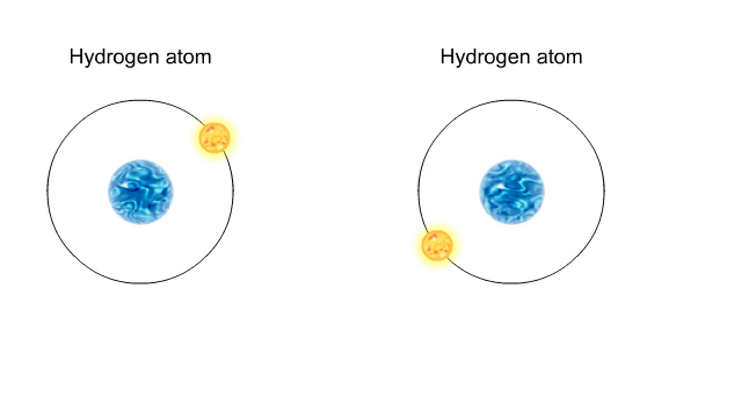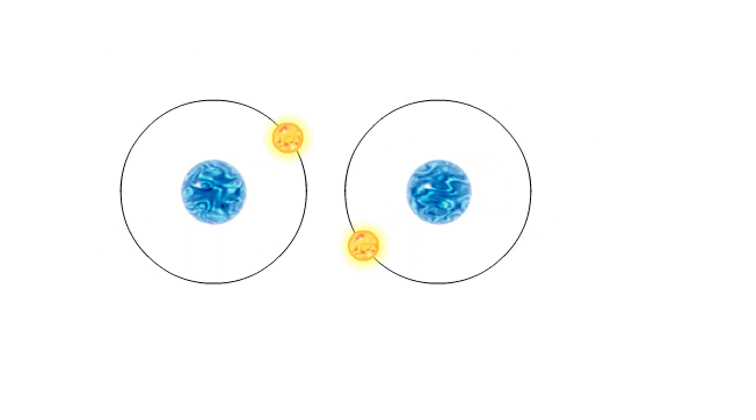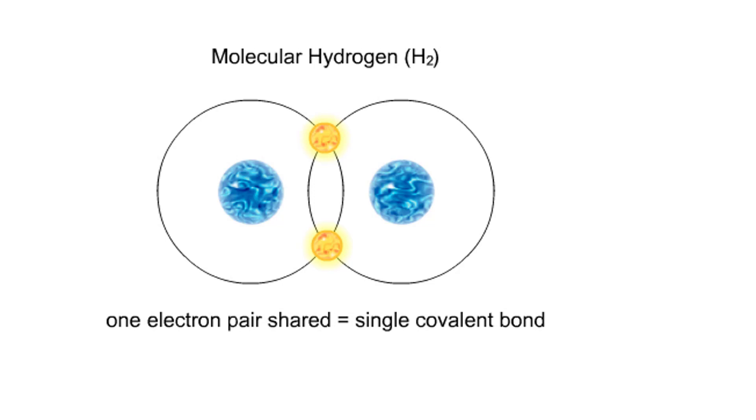Two hydrogen atoms, each with an unpaired electron in the outer shell, can pair up to share a pair of electrons. This stabilizes the atoms and forms a single covalent bond. Both nuclei exert the same pull on the electrons, so they are shared equally, and the bond is nonpolar. There is no charge difference between different parts of the molecule.